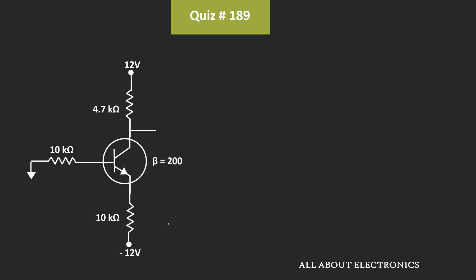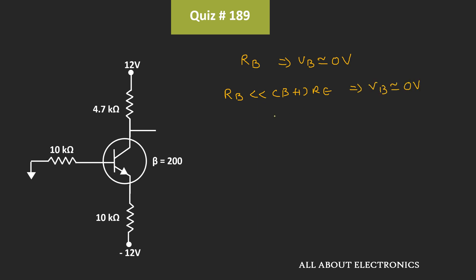If you observe this circuit, it is the emitter bias configuration, or two-supply emitter bias configuration, of the BJT. For this configuration, we had seen that if the value of the base resistor is very small, this base voltage Vb is approximately equal to 0V — specifically when Rb is much less than (β+1) times Re.